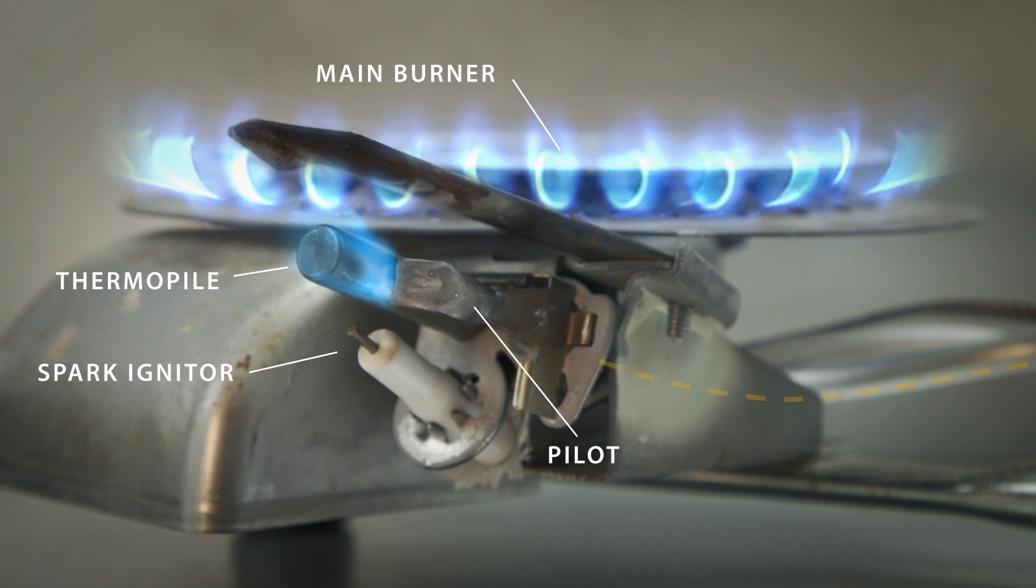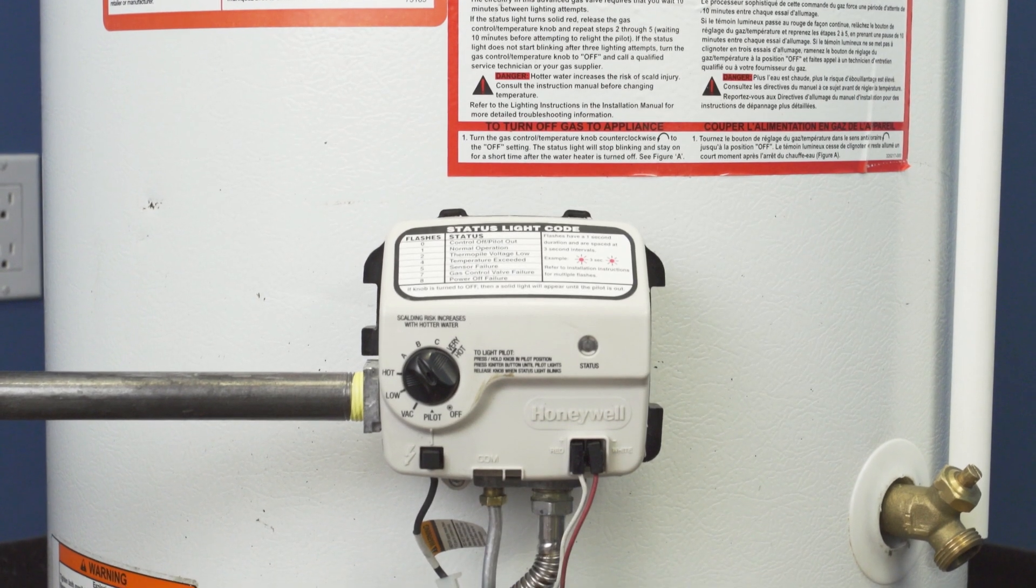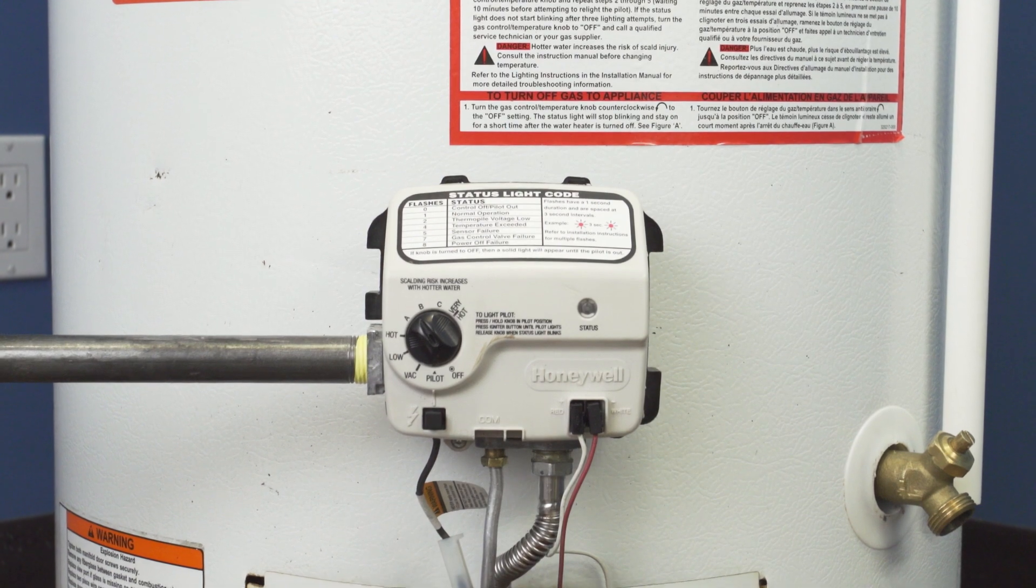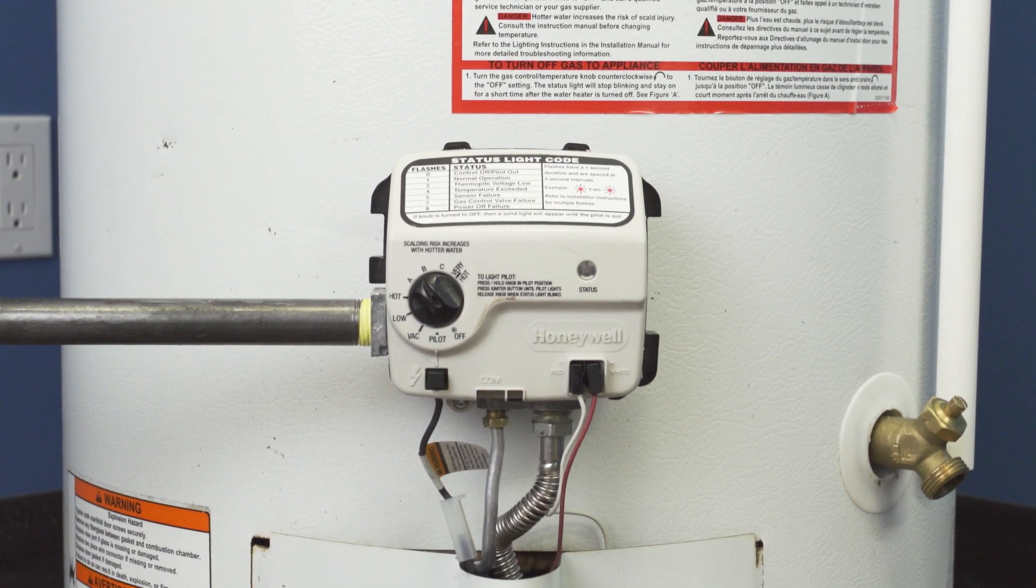Next to the pilot is the thermopile, which generates a small electrical current when heated by the pilot flame. This produces less voltage than a AA battery, but enough to power the electronic gas valve and diagnostics.